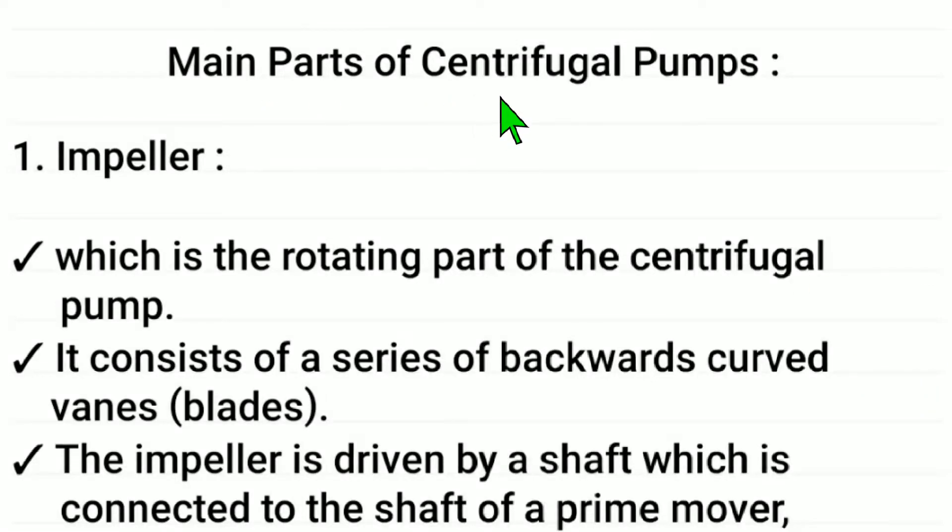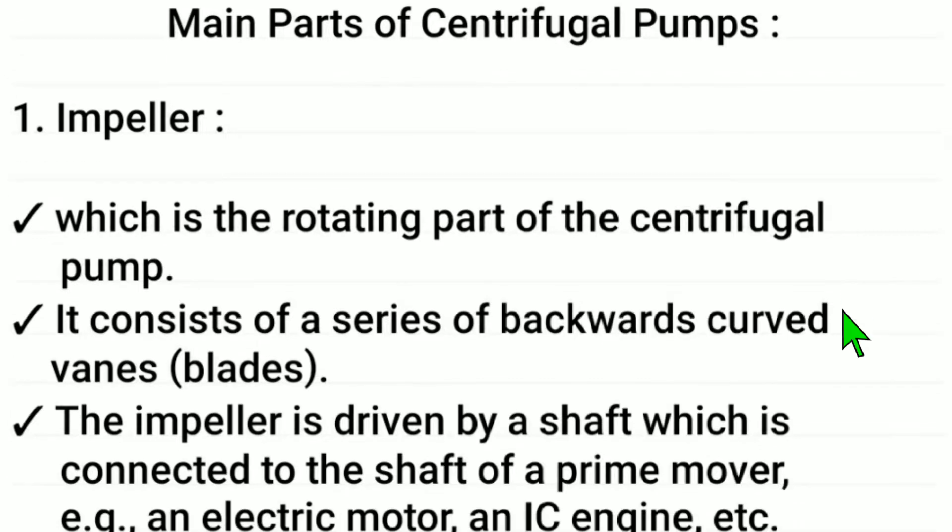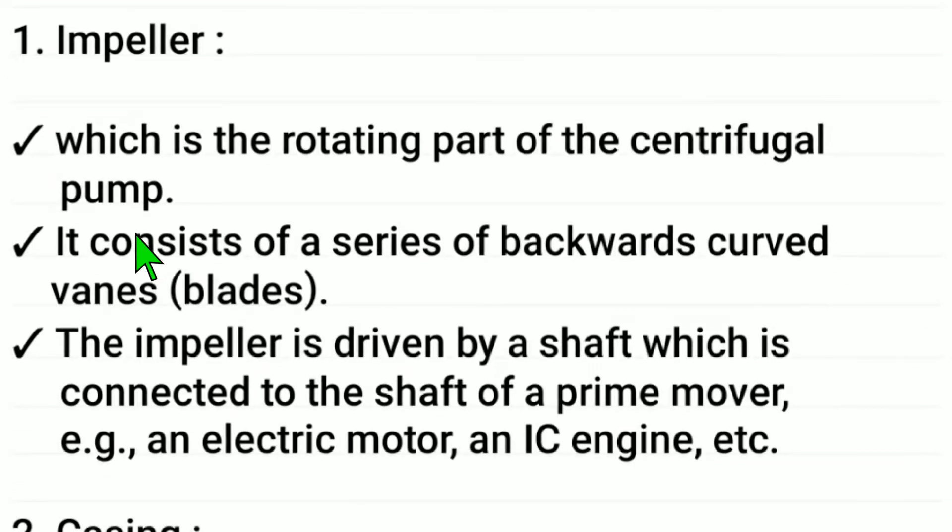Main parts of centrifugal pumps. Number one, impeller. Impeller is the rotating part of the centrifugal pump. It consists of a series of backwards curved vanes or blades.